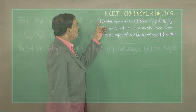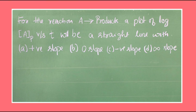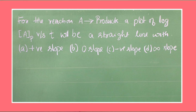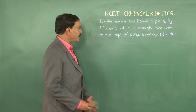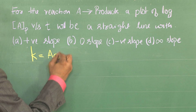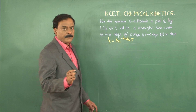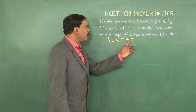The next question: for the reaction A giving products, a plot of log K versus 1/T will be a straight line. The solution is dependent on our understanding of the Arrhenius equation, which is K = A·e^(−Ea/RT). The Arrhenius equation gives the relation between rate constant and temperature.